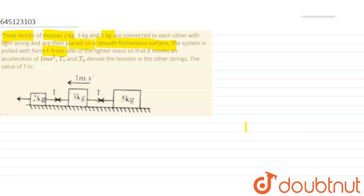So, the problem states that the system moves with acceleration 1 meter per second square. T1 and T2 denote the tension in the strings. The question asks for the value of F. Three blocks are connected by strings. Two strings have tensions T1 and T2, and the whole system has acceleration A equal to 1 meter per second square.